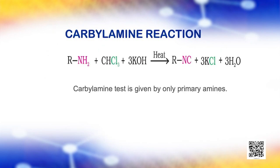Aliphatic and aromatic primary amines on heating with chloroform and ethanolic potassium hydroxide form isocyanides or carbylamines, which are foul-smelling substances. Secondary and tertiary amines do not show this reaction. This reaction is known as the carbylamine reaction or isocyanide test and is used as a test for primary amines.